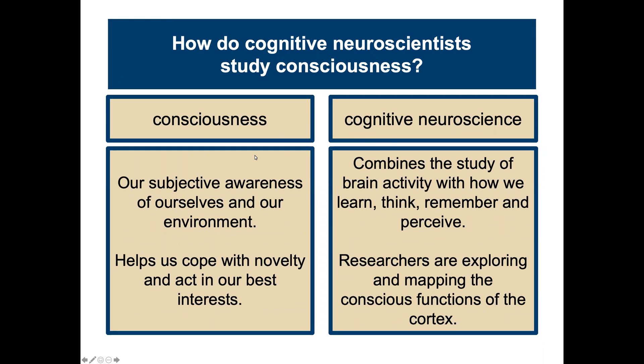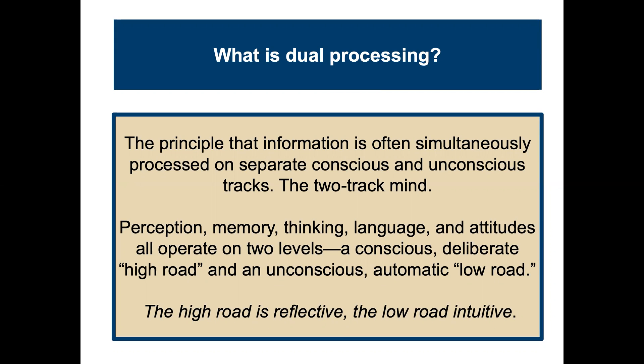How do cognitive neuroscientists study consciousness? Consciousness is our subjective awareness of ourselves and our environment. Today's science explores the biology of consciousness — our subjective awareness of ourselves and others. The question of how consciousness arises from the brain is still largely a mystery, but more is being learned all the time. Cognitive neuroscience combines the study of brain activity with how we learn, think, remember, and perceive. Dual processing is the principle that information is often simultaneously processed on separate conscious and unconscious tracks — the two-track mind.